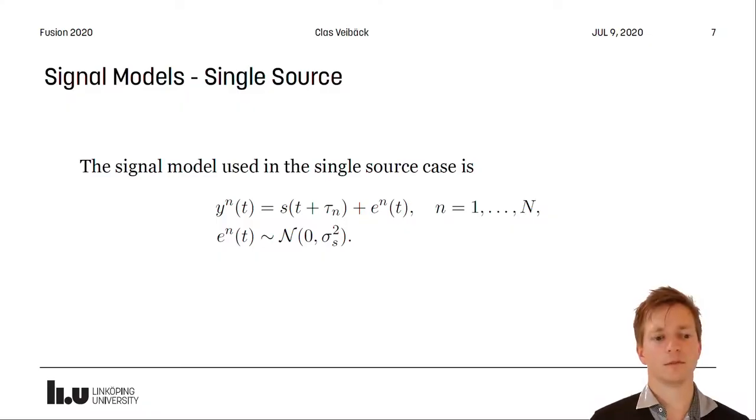The signal model we use is the following, where each microphone in the single source case receives a signal that is just a delayed version of the true signal with some measurement noise. This is a rather simplified version since we don't consider any attenuation or room impulse response, but this is our first attack on the problem.